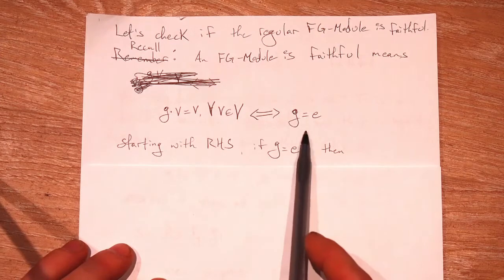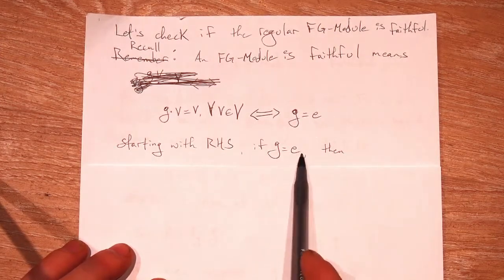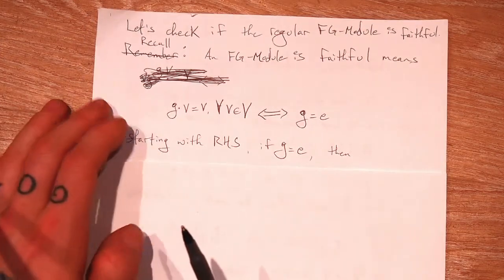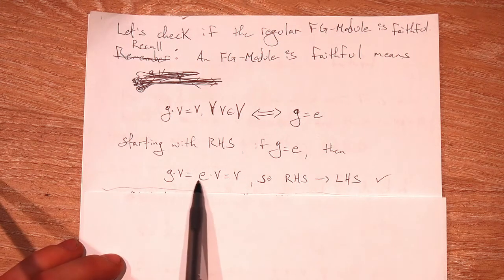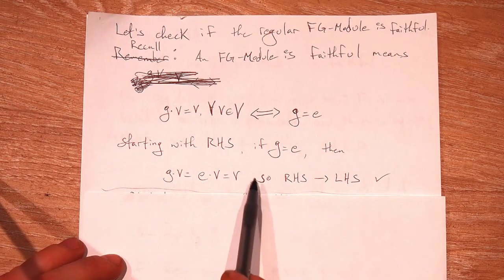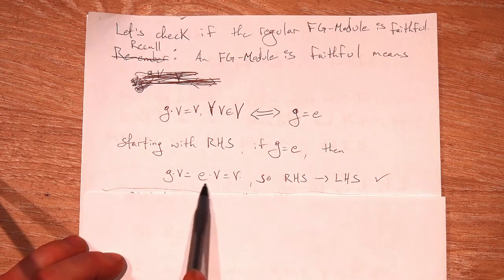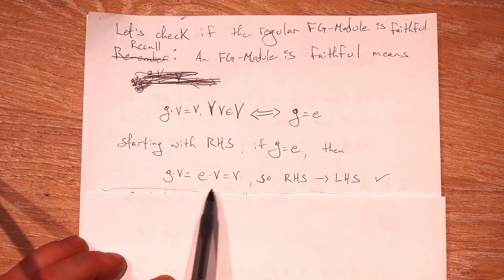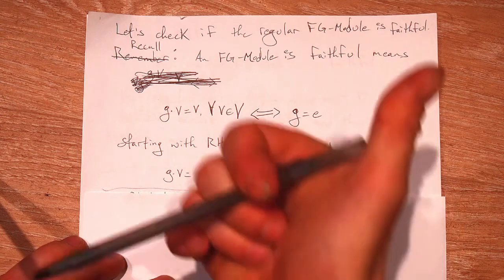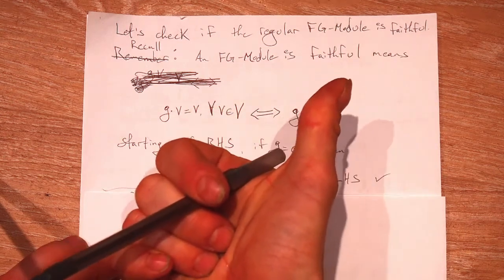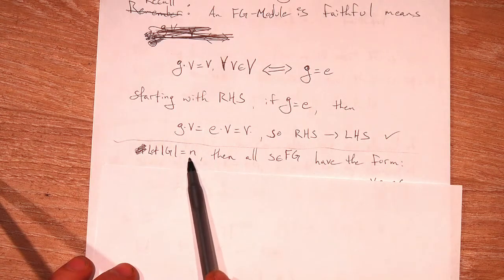So if an FG module is faithful, the only element that leaves all vectors unchanged must be the identity element. So let's check if this is true for the regular FG module. Let's start with the right-hand side. This is easy. If G is equal to the identity element, then we have that G acting on V — this is just the identity acting on V — gives us back V. The identity element always acts like this for an FG module regardless of anything. So the right-hand side implies the left-hand side. Easy. So then let's call the order of our group N.